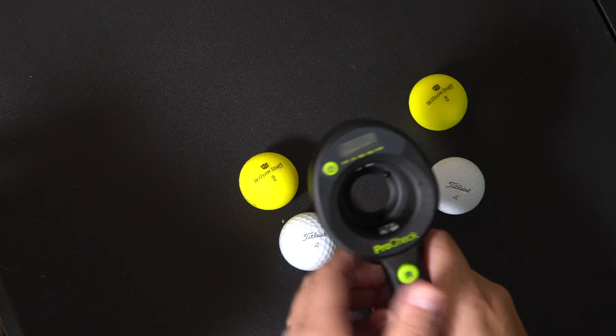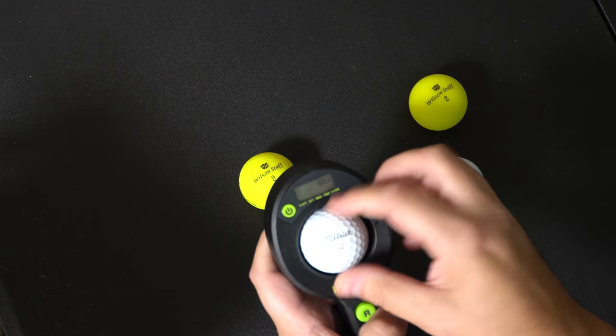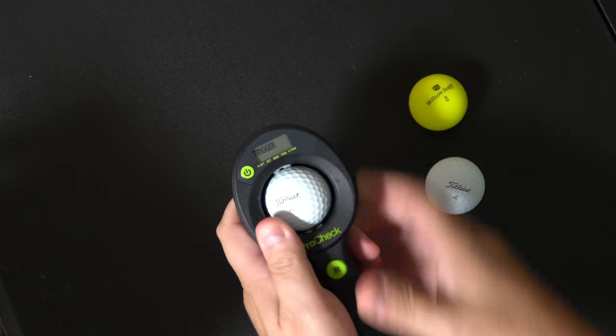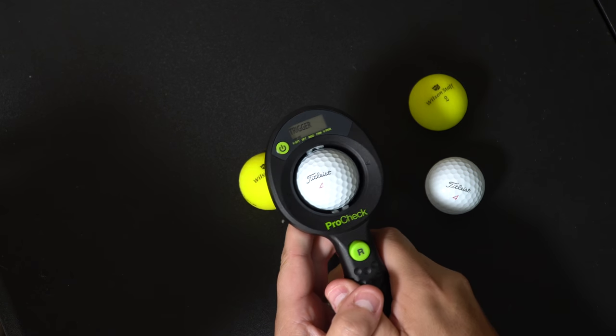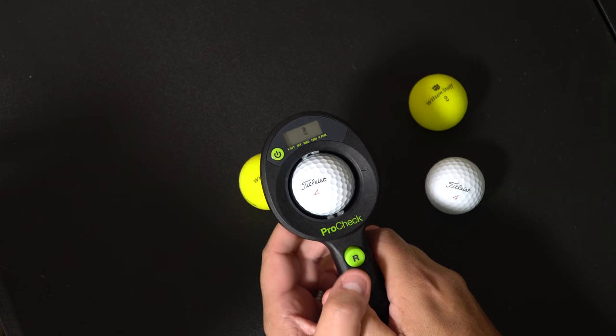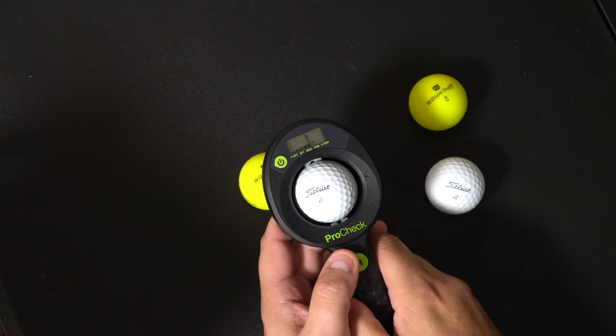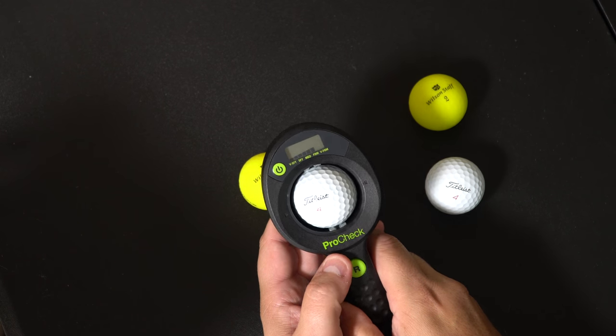So first, power on the device. Titleist Pro V1X, drop that in there. It says pull the trigger, so we do so. Press the release, and that says firm.